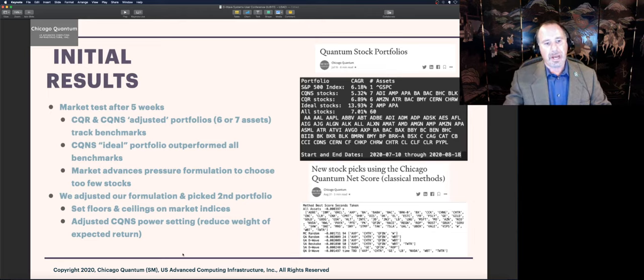We had to make some changes. We had to set floors and ceilings on the market indices because the stock market's rising so much, it's skewing the results. And we also adjusted the power settings, 2 plus alpha. That's helping us to get four stock answers.